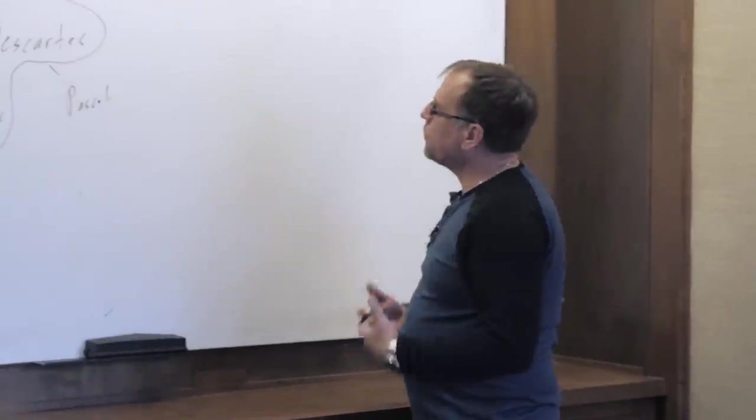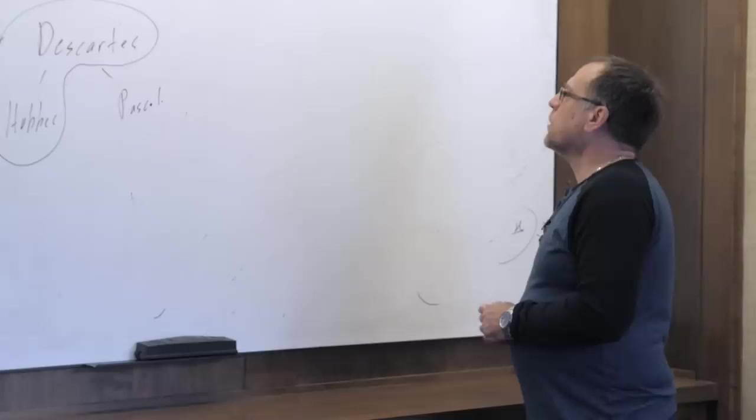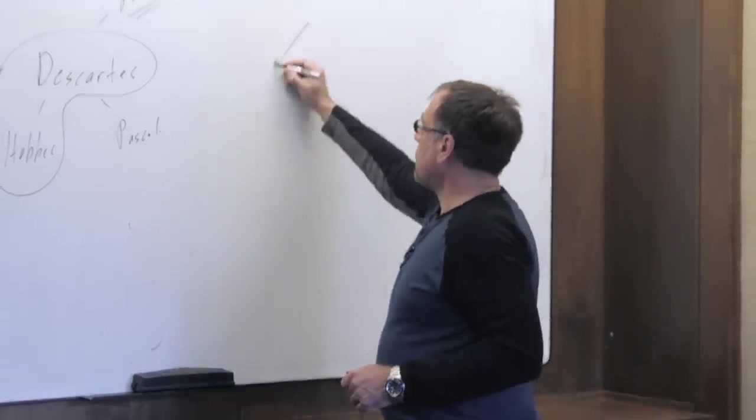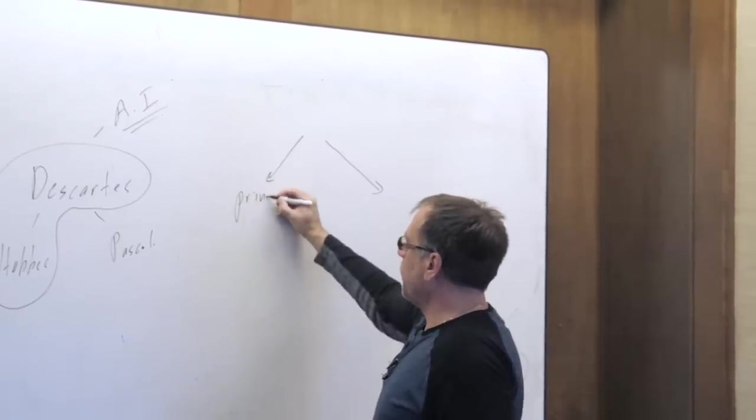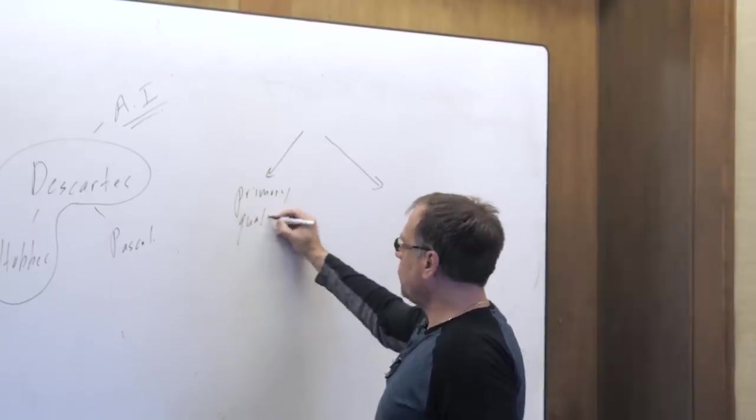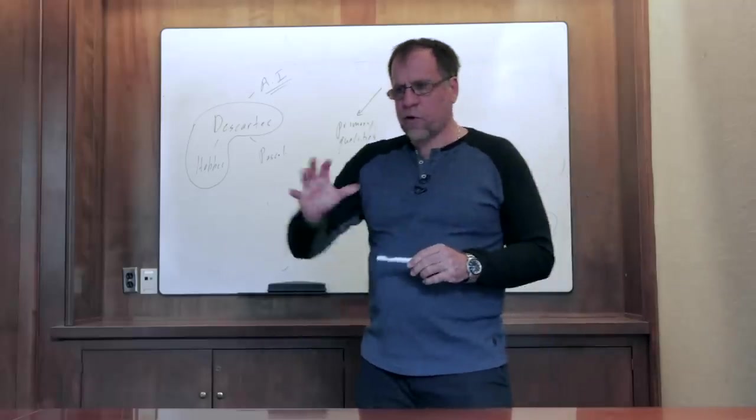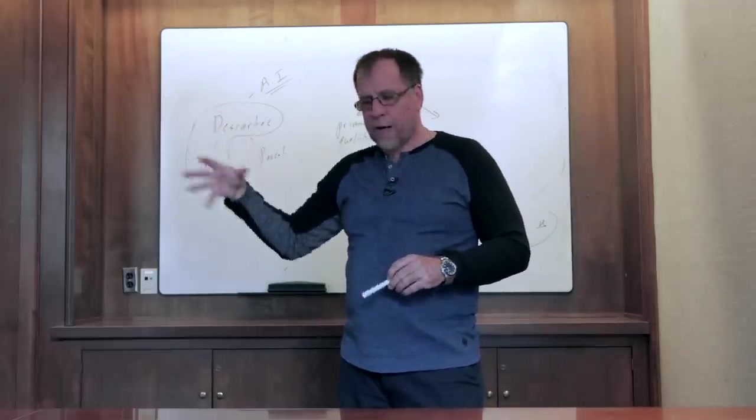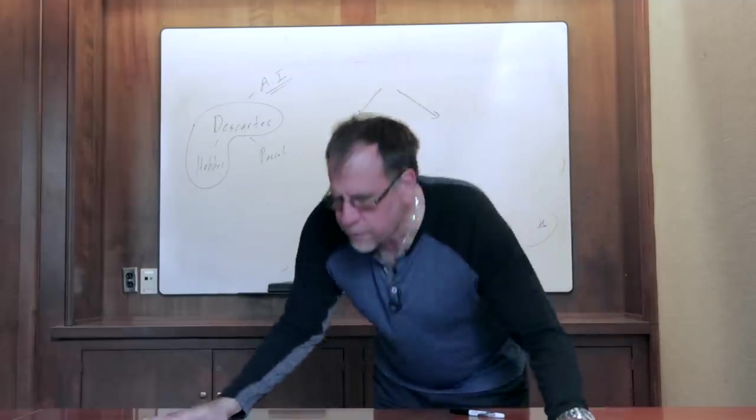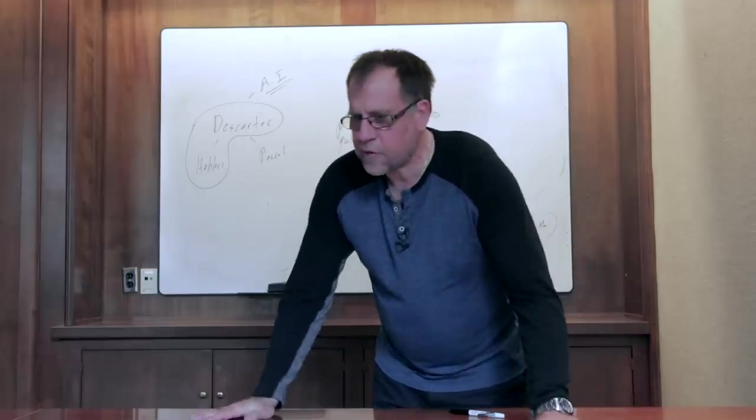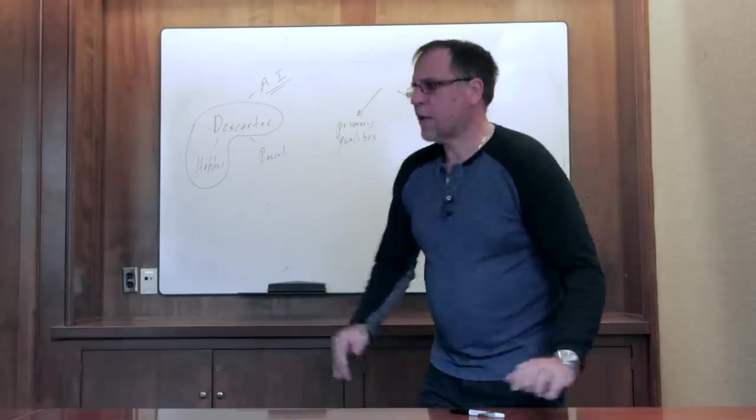And then you get the idea that there are two kinds of properties. There are the properties that are measurable by math. Those are the primary properties, the primary qualities. The ones that are mathematically measurable. And although the term isn't quite used this way in Descartes' time, shortly thereafter it's going to come to take on this meaning: the mathematical properties are properties that are in the object, regardless of whether or not anybody is paying attention to them, looking at them, involved with them. So if I can measure it mathematically, it's in the object. It's objective.